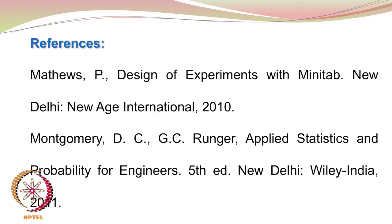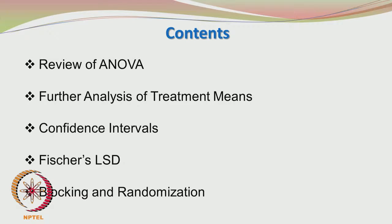Let us see the reference books. In addition to Montgomery and Runger's Applied Statistics and Probability for Engineers, we also have the book by P. Matthews on Design of Experiments with MINITAB. In today's classes we will be looking at the review of analysis of variance, further analyzing treatment means, confidence intervals, Fisher's least square difference (LSD), blocking, and randomization.